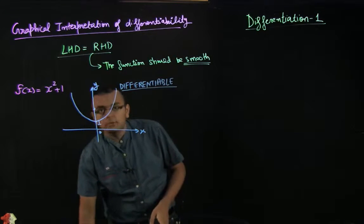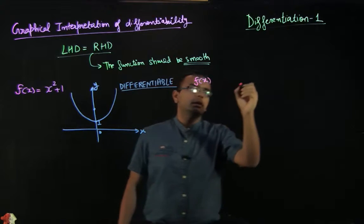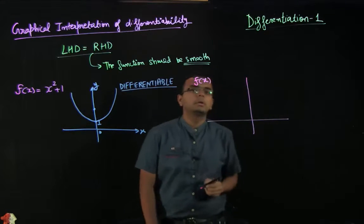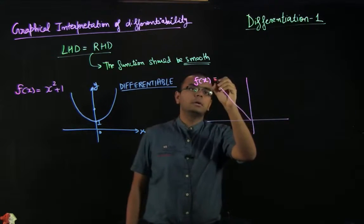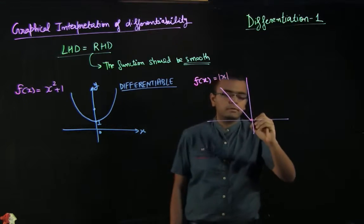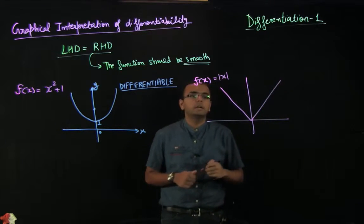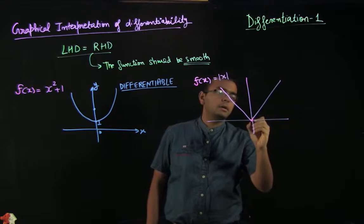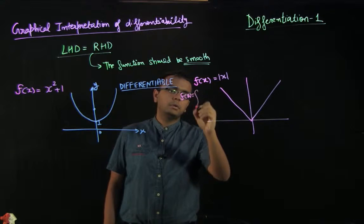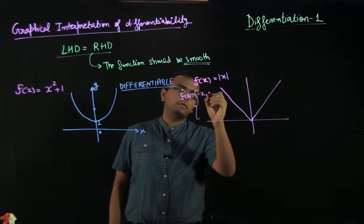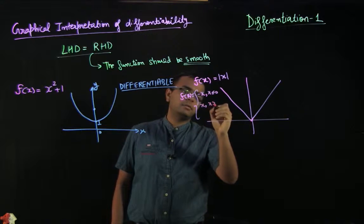Now let us take another example to understand what we mean by a corner. If we have a function like mod x — we know that mod x means f(x) is equal to minus x for x less than or equal to 0.